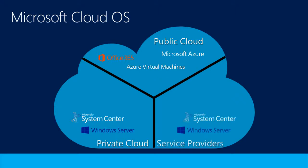We also have service providers who give us customization and reach. A customer asked me: 'I have a specific workload and I'd like to put it in a specific server, in a specific rack, in a specific location. Can I do that with Azure?' Unfortunately, that's not how we work at Azure scale — we're buying servers in Azure literally thousands at a time. A rack is tiny. So we have a cloud OS network of service providers that can give you that customization and reach.